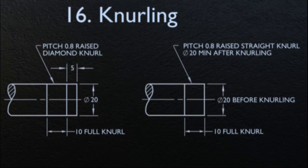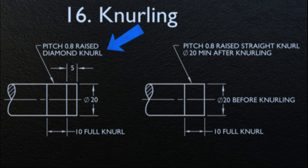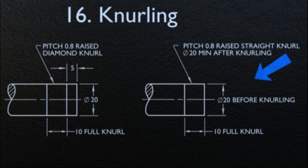The last feature to be discussed in this video is knurling. Knurling is specified in terms of type, pitch, and diameter before and after knurling. Where control is not required, the diameter after knurling is omitted. Where only a portion of a feature requires knurling, the location and length of the knurl shall be specified. For knurling for press fit, where required to provide a press fit between parts, knurling is specified by a note that includes the type of knurl required, its pitch, the tolerance diameter of the feature before knurling, and the minimum acceptable diameter after knurling.